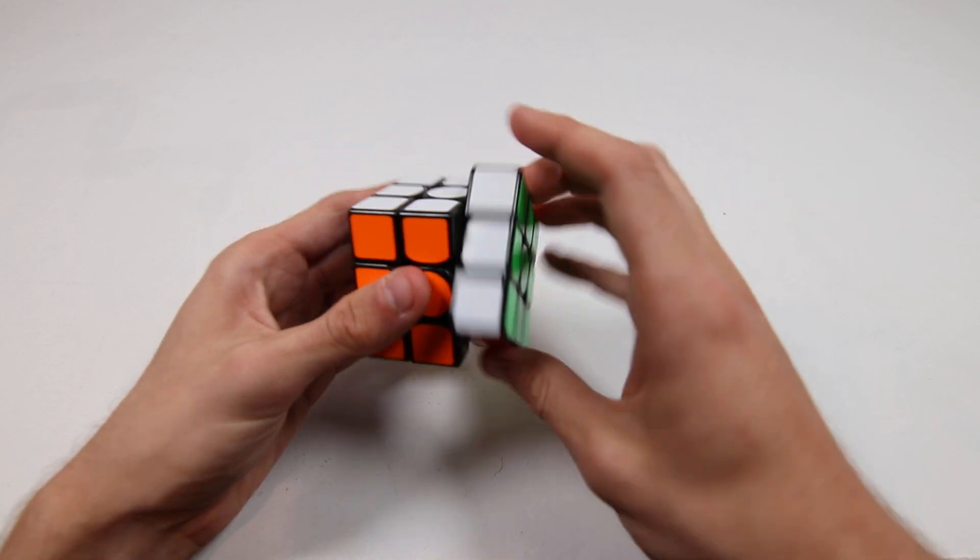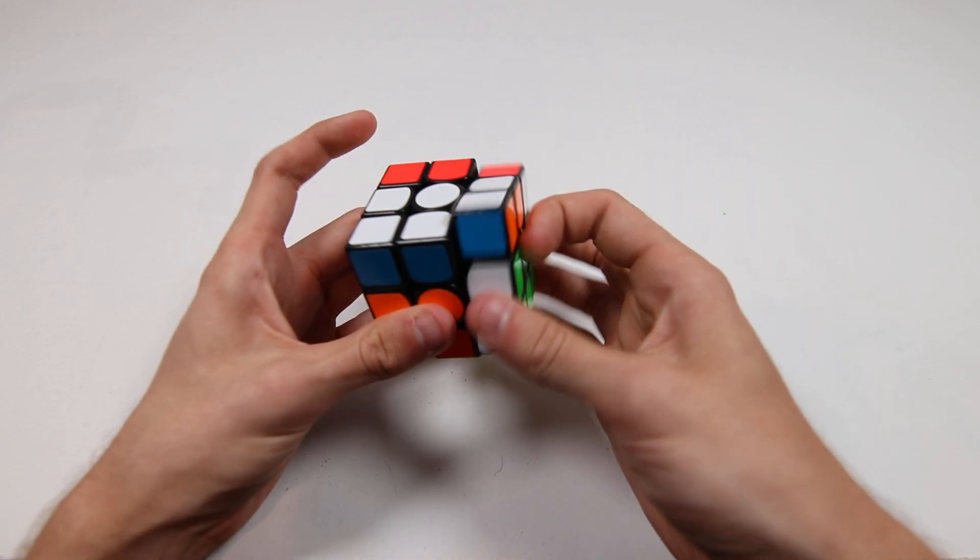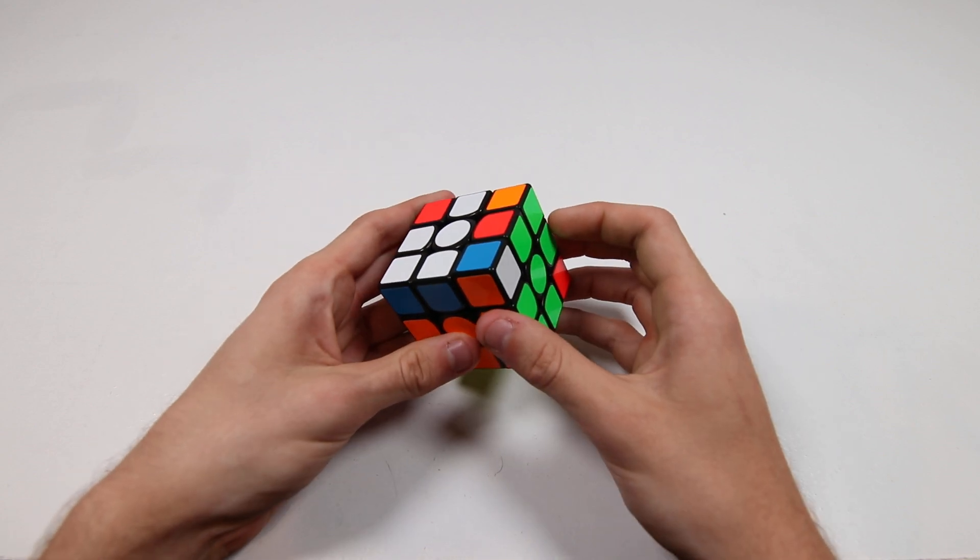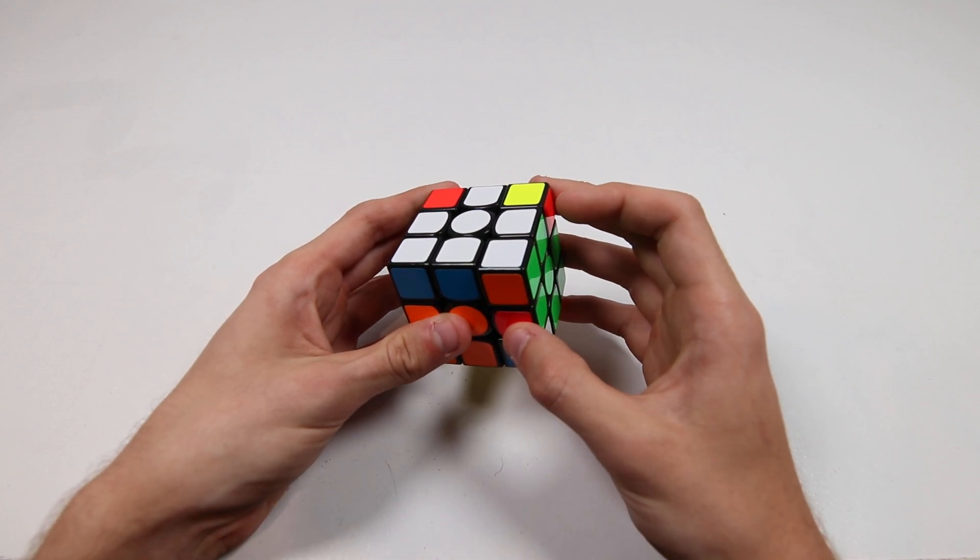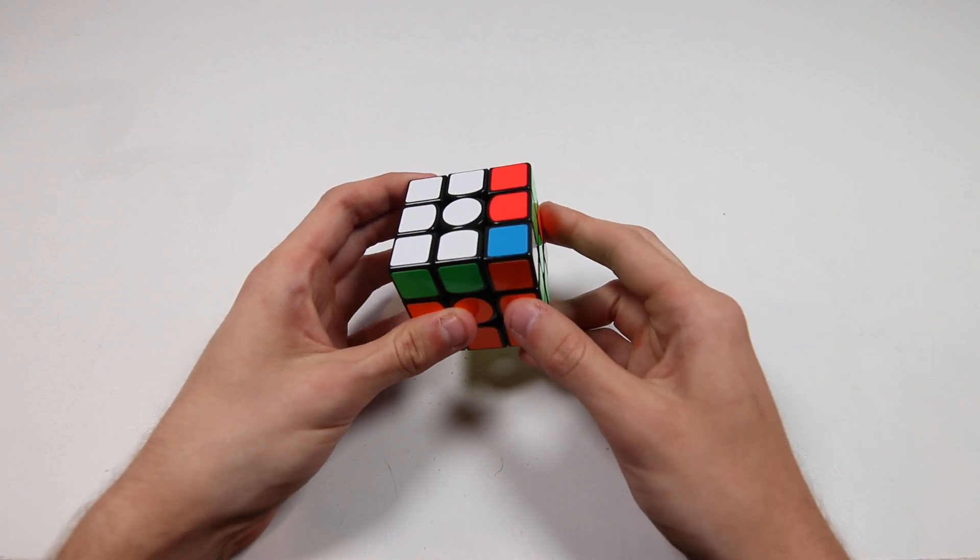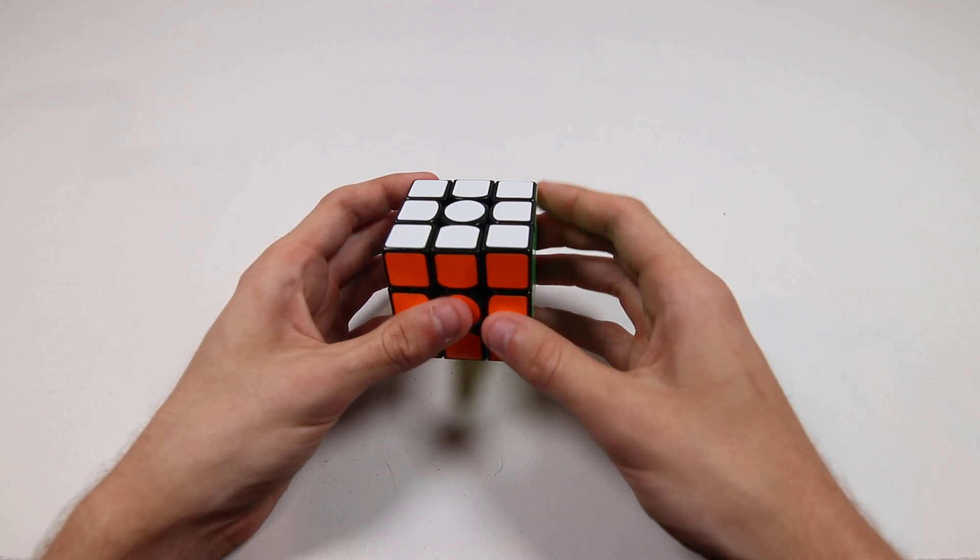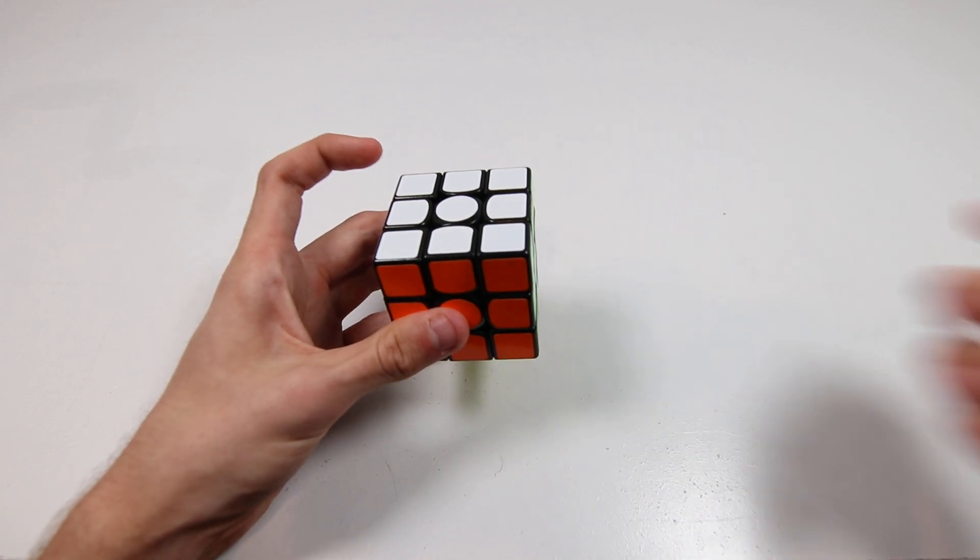So this pair would, okay now I did it for some reason, but yeah. So the way it would kind of look is R prime middle finger U, and then reset the hand and then just do normal stuff. So like that.